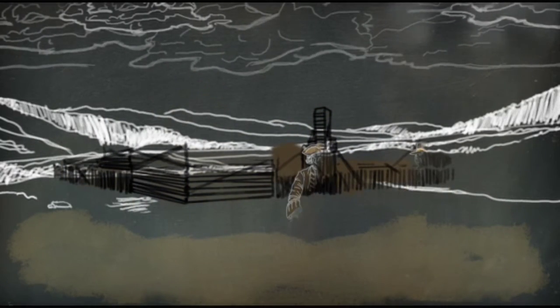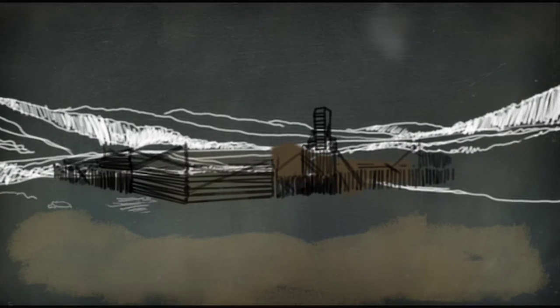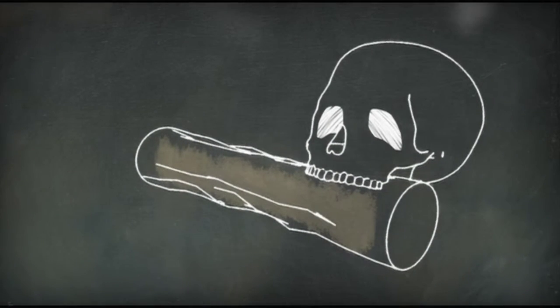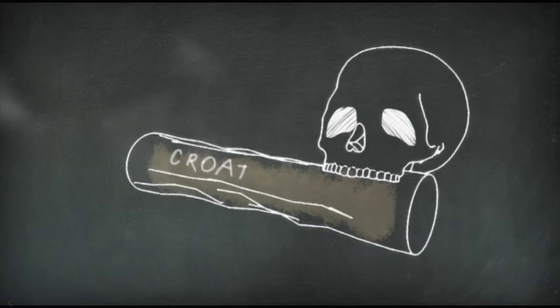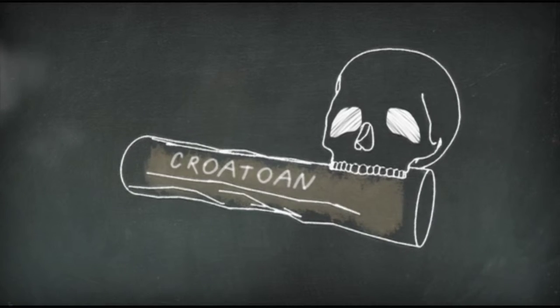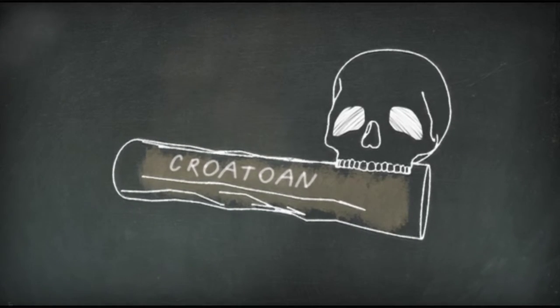By the time the supply ships finally return almost three years later, the colony has completely vanished. All they find are the bones of one man and this word 'Croatoan' carved on a post left in the encampment. This has turned into one of these mythical legends of American history.